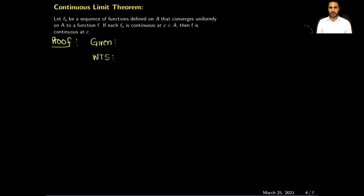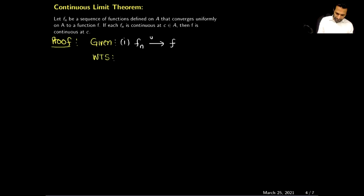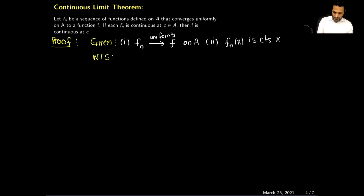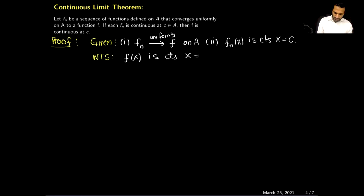I will begin the proof by writing down what is given and what we want to show. Given: there are two assertions. The first is that the sequence of functions converges to f uniformly on the set A. The second is that each f_n(x) is continuous at x = c. What we want to show is that the limit function f(x) is continuous at x = c.